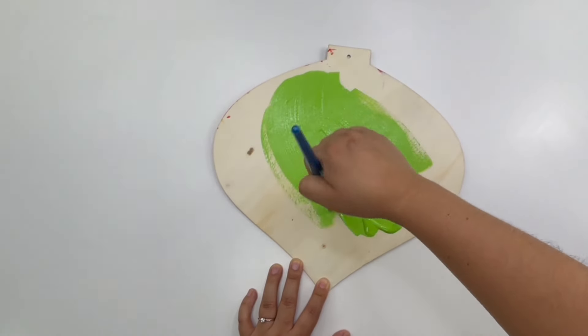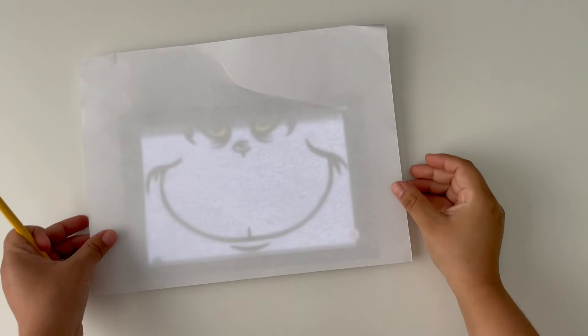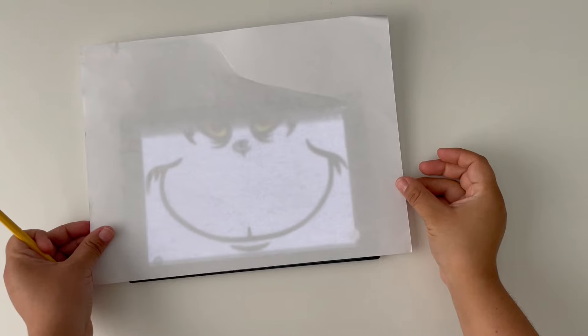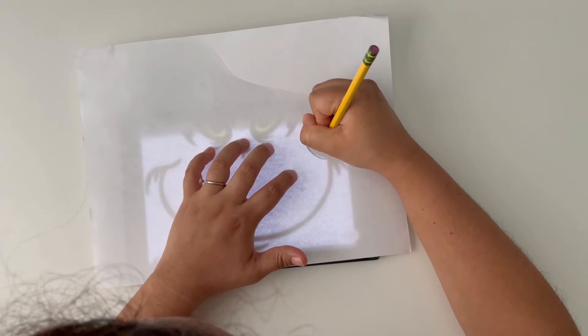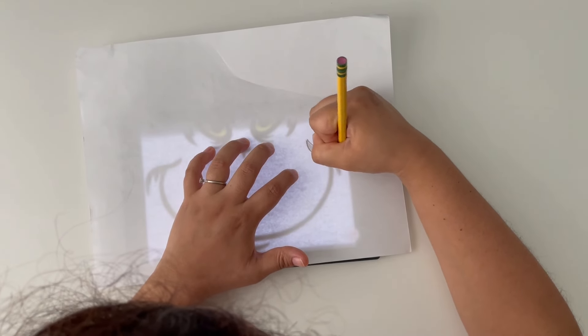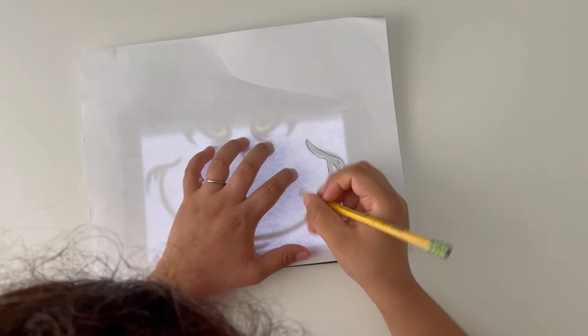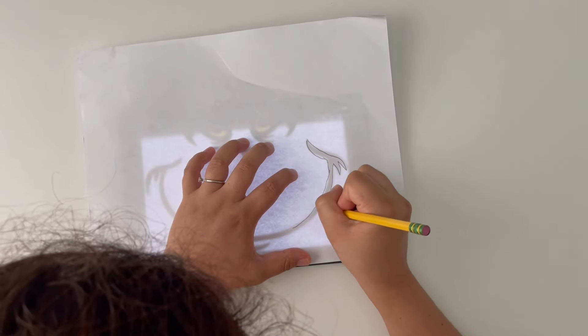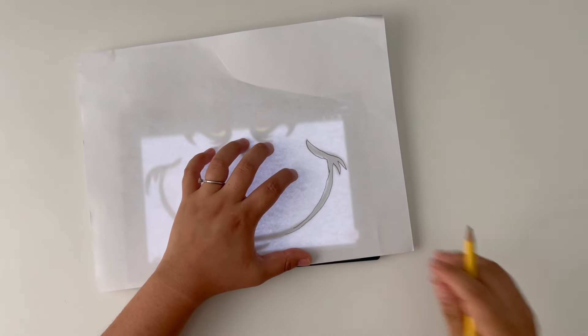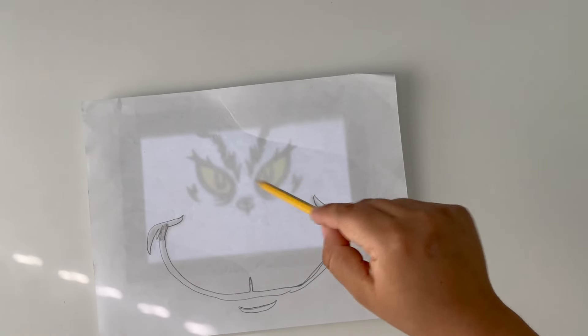Once I am done I'm going to set it to the side and let it dry. Meanwhile I'm going to show you how I achieved getting the Grinch face without having a printer. What I did is I used my 10 inch tablet. I searched for the Grinch face, which I actually did Grinch face drawing. Once I found the one that was easiest to trace, I then put a blank computer paper on top and traced it.